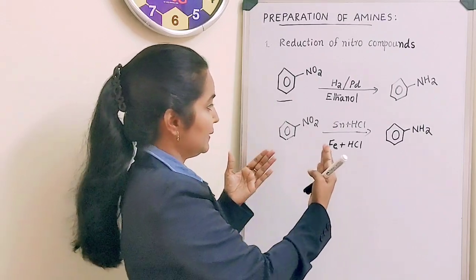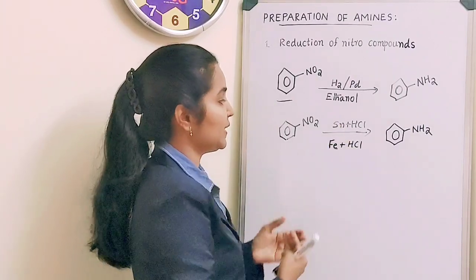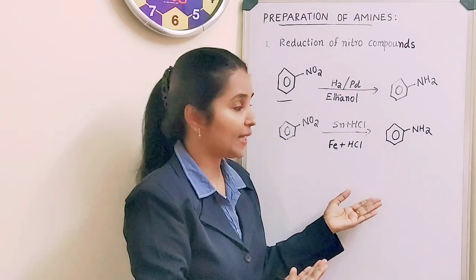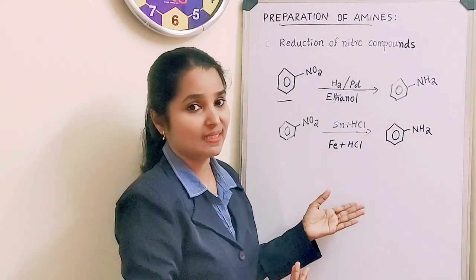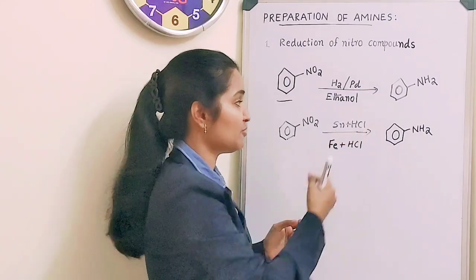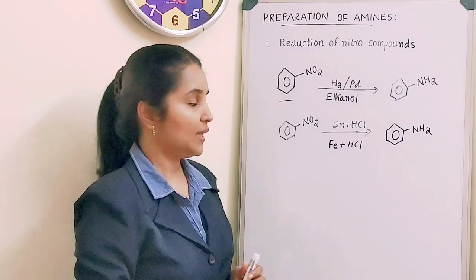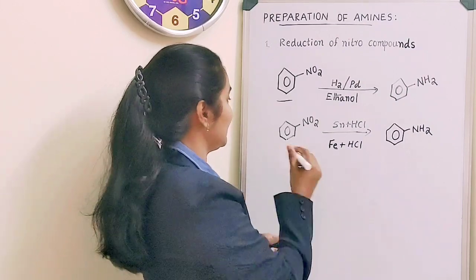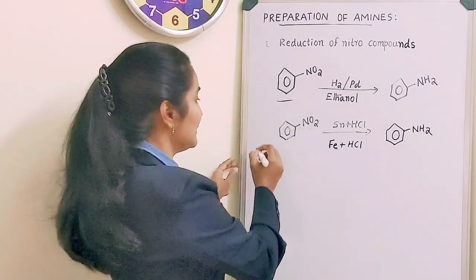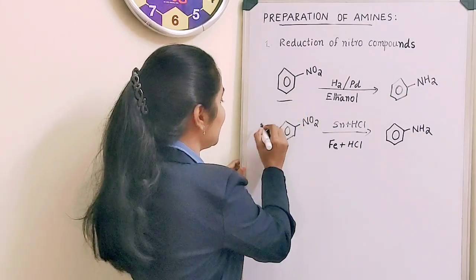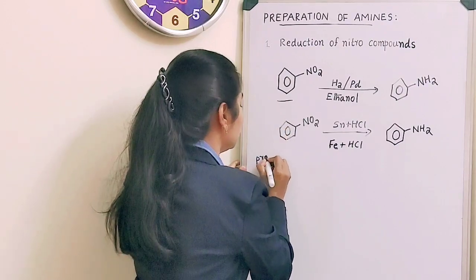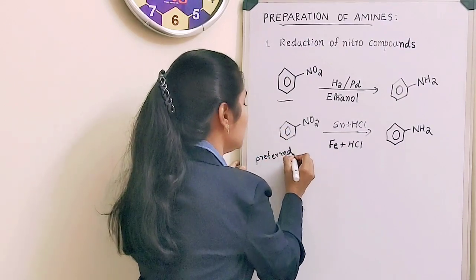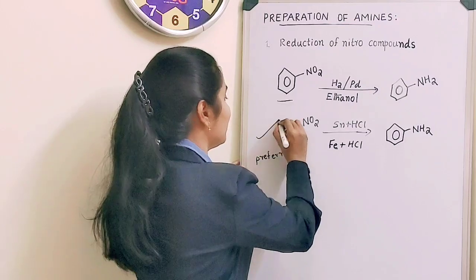We have two methods shown here. One is with hydrogen gas over finely divided metals, and the other is with iron scrap and hydrochloric acid — metals in an acidic medium. Among these two methods, the second method is preferred.